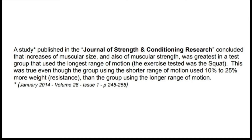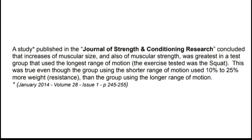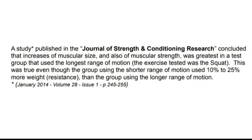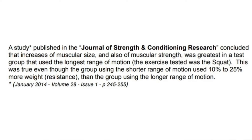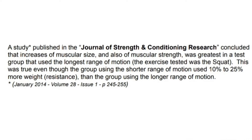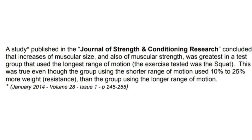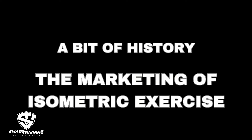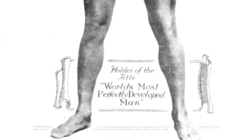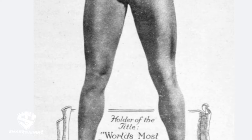Static muscle contraction, also known as isometric muscle contraction, occurs when a muscle holds tension without lengthening or shortening. Instead of causing the joint to flex or extend, the muscle holds that anatomical position without movement. Generally speaking, dynamic muscle contraction is considered more productive for the purpose of muscle growth and physique development as compared with static muscle contraction.